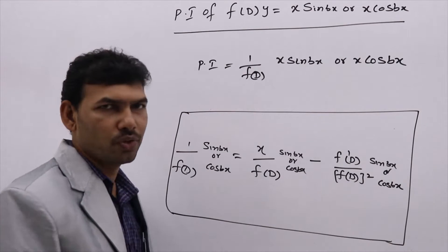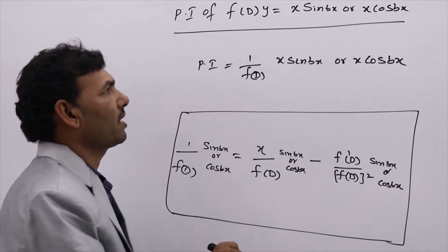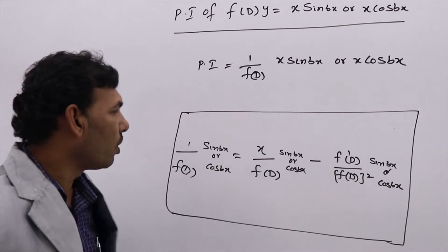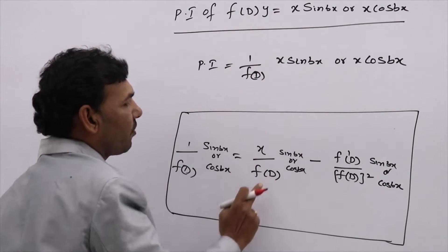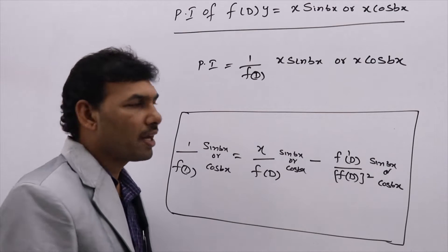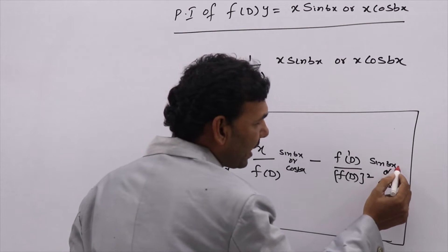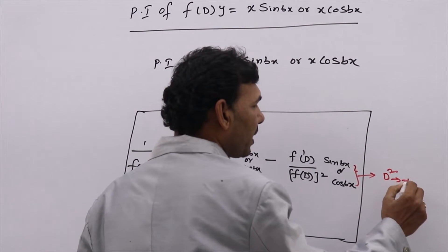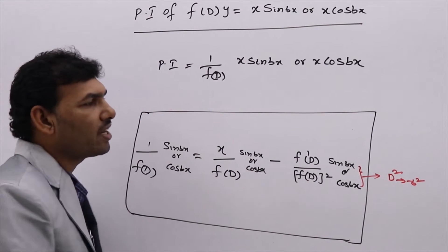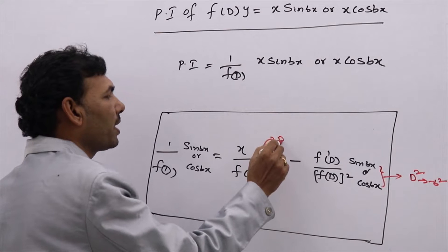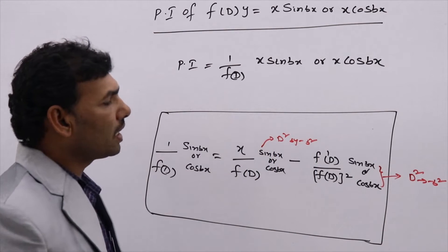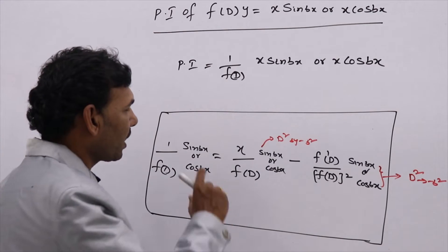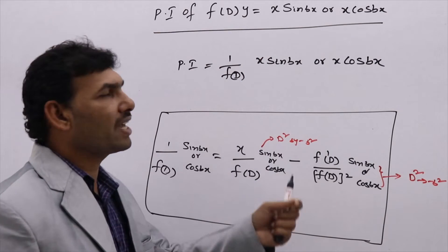This is the formula we are going to use to evaluate the PI whenever RHS is x·sin(2x) or x·cos(3x). First write this formula. In the place of f(D), write whatever f(D) is — for example, d²+1. In the place of f'(D), write 2D, which is the differentiation of d²+1. In the place of f(D) whole square, write (d²+1)². If you have sin(x), write sin(x); if you have cos(2x), write cos(2x).